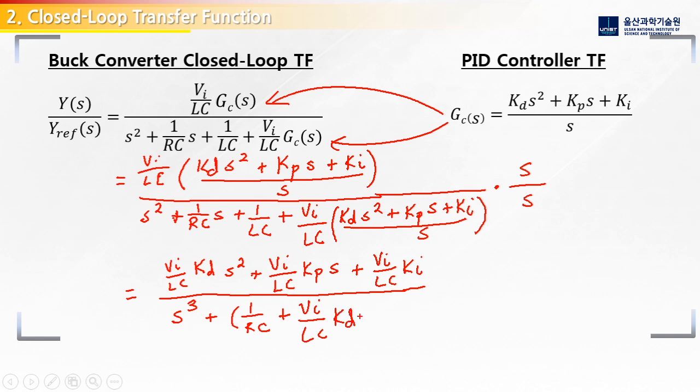Okay, now we multiply the terms for just s. So we're going to have 1 over LC plus Vi over LC KP multiplied by s.